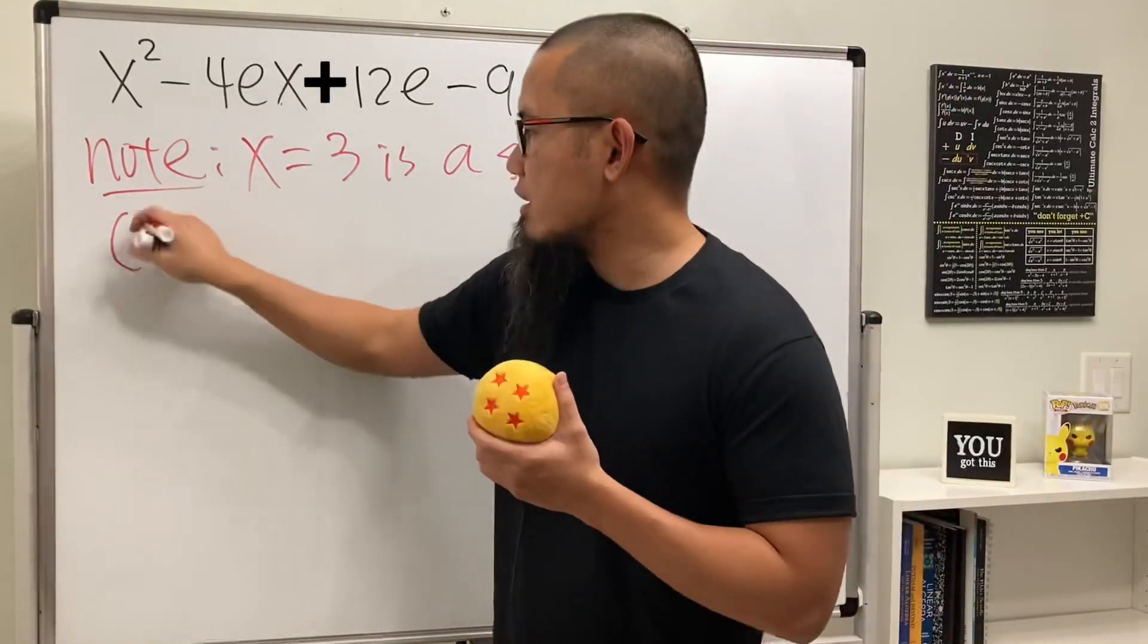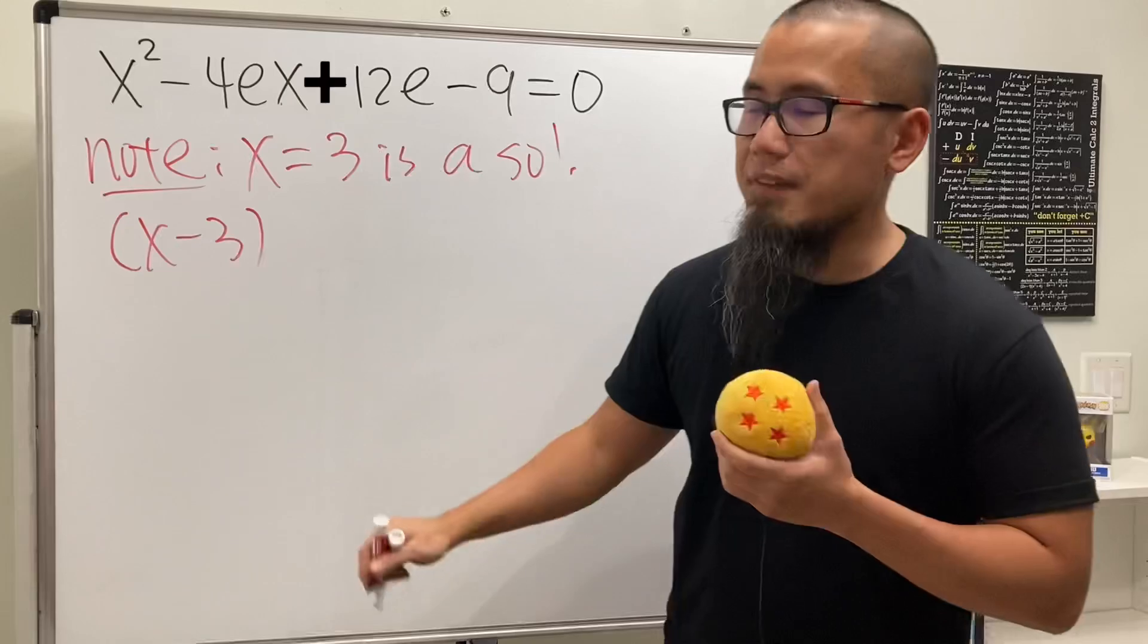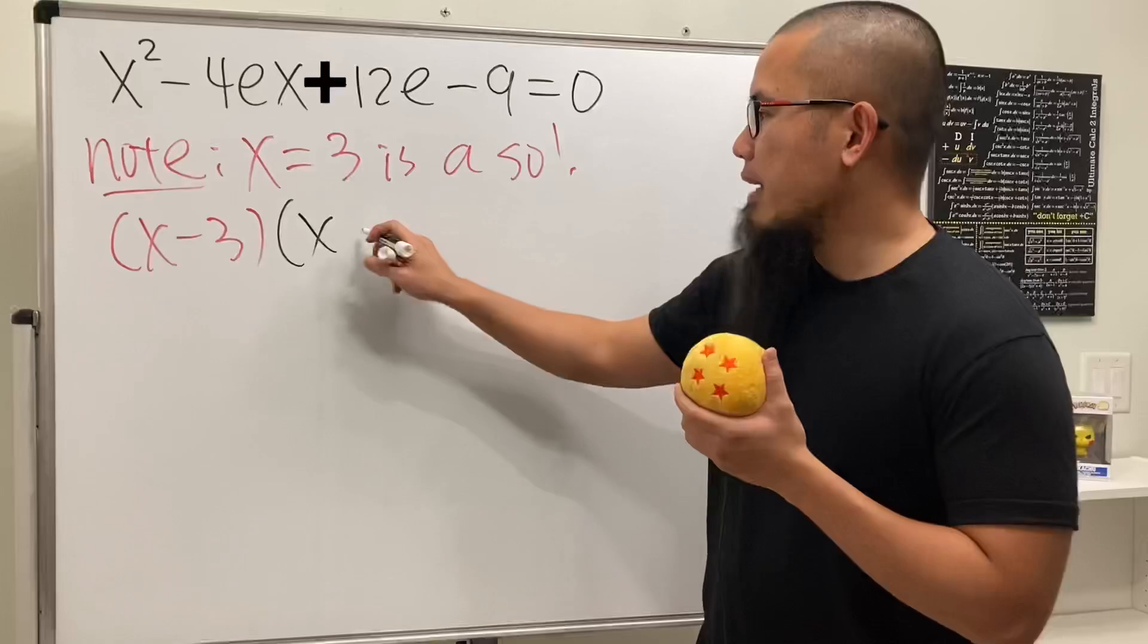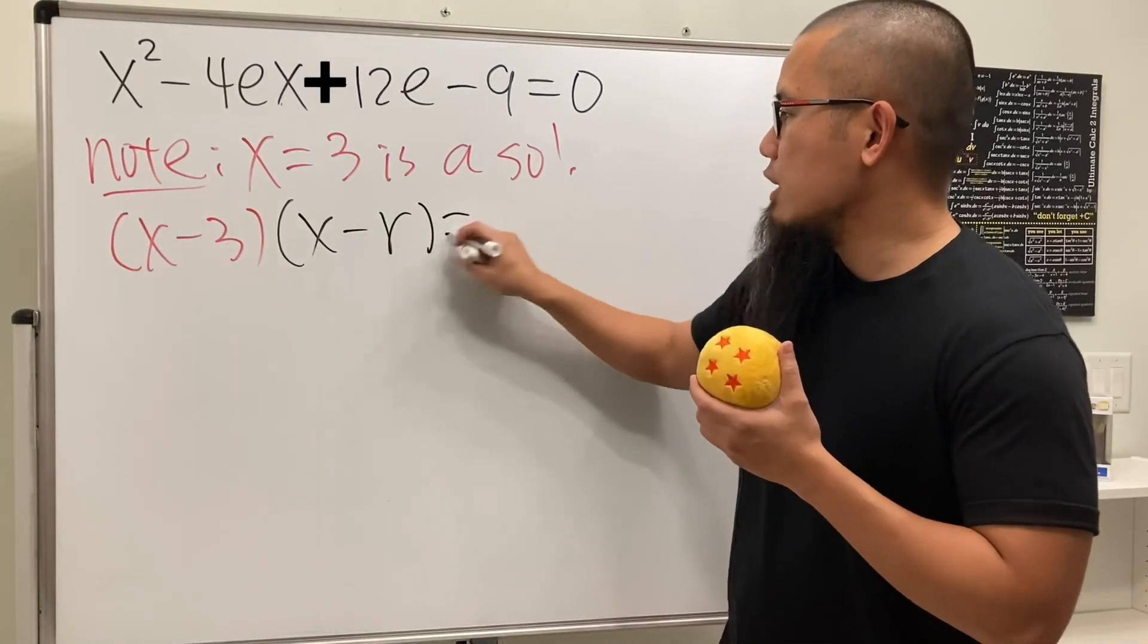And this means we must have a factor x minus 3. And for the other factor, because we have x squared right here, so we must have just x because x times x gives you the x squared. And then minus the other root that says r, and this is equal to 0.